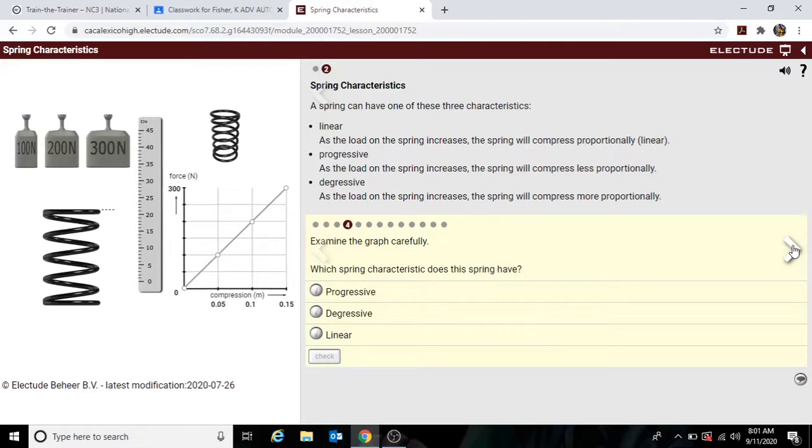Okay, so now this is asking us to examine the graph. Here's our three measurements we got, 0.05, 0.1, 0.15. You see it's a straight line. So which spring characteristic does this spring have? Progressive, degressive, or linear? Well, linear: as the load of the spring increases, the spring will compress proportionally. That means it will continue to progress by the weight. So 100, 200, 300, it's an even amount of weight, so it's an even amount of progression. So this one was linear.